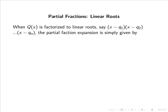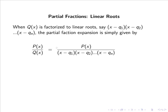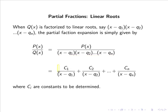In general, when q(x) is factorised to linear roots — say (x − q₁)(x − q₂) and so forth — the partial fraction expansion of p(x)/q(x) is simply given by c₁/(x − q₁) + c₂/(x − q₂) + ... + cₙ/(x − qₙ), where the cᵢ are constants to be determined.